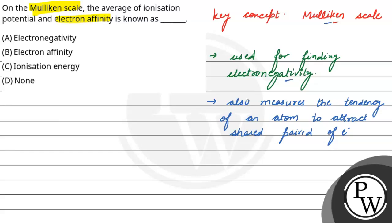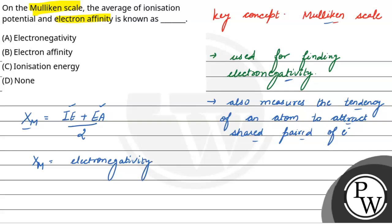On the Mulliken scale, the relation used is: Xm = (ionization enthalpy + electron affinity) / 2. That means it is the average of ionization enthalpy and electron affinity to find out electronegativity. Here, Xm is electronegativity, IE is ionization enthalpy, and EA is electron affinity.